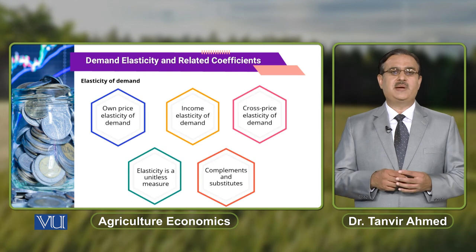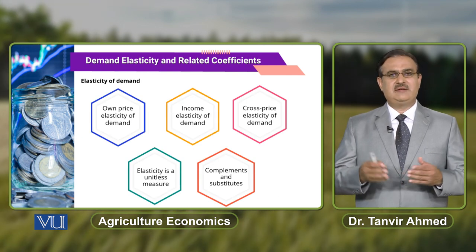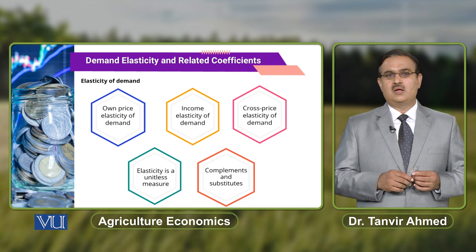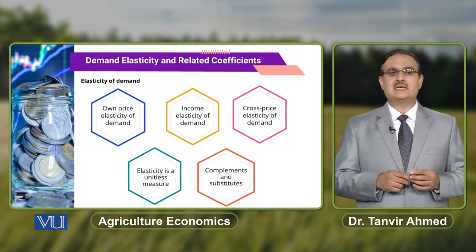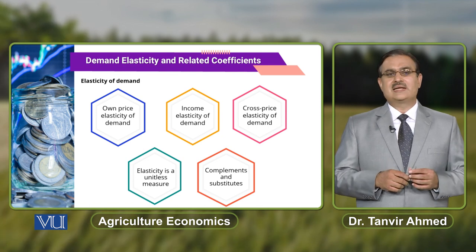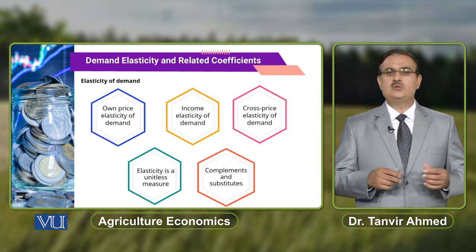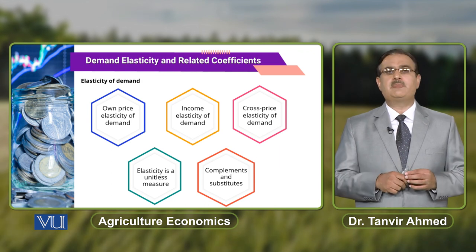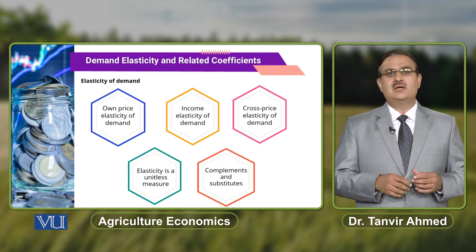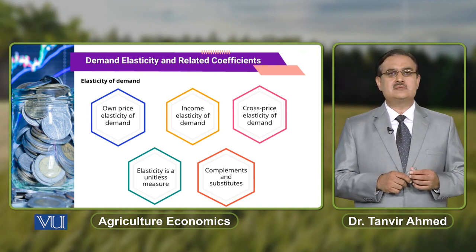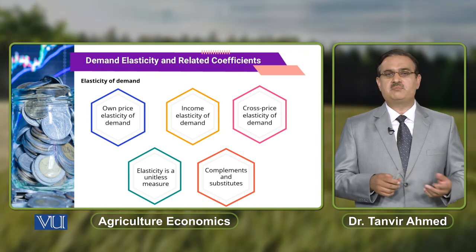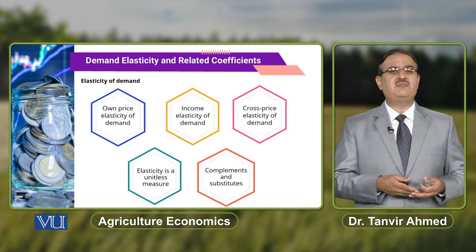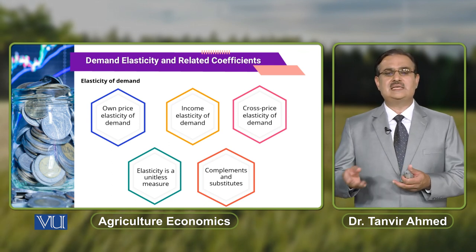When you talk about elasticity of demand, there are different types: price elasticity of demand, income elasticity of demand, and cross price elasticity of demand. One very important thing is that elasticity is a unitless measure. Price has a unit — usually rupees — and quantity has a unit, such as cages, tons, or months. But elasticity is a unitless measure that only indicates relative change in one variable due to relative change in another variable.